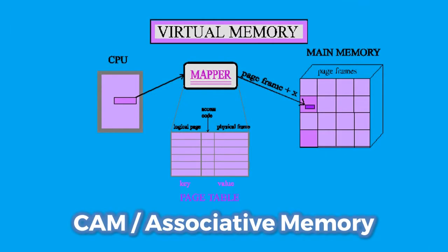Content addressable memory, also known as associative array or associative memory, is used in very high speed searching applications. It compares an input word or a tag against a table of stored data and returns the address of the matching tag.